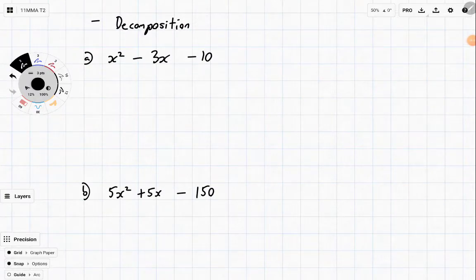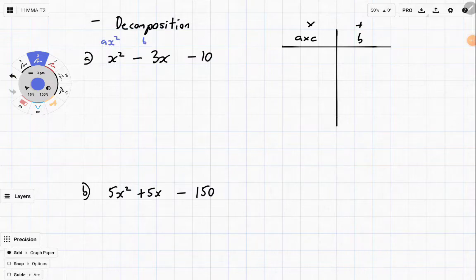Now decomposition is a very powerful tool. It usually is used in situations where we don't want to use the quadratic formula. So it works like this. You are trying to find numbers that multiply to a times c, and you're looking for numbers that add to b. What are a, b, and c? a is the coefficient in front of x squared, b is the coefficient in front of x, and c is the constant on the end. So in this case, a is 1 and c is negative 10, so that's equal to negative 10. b in this case is just equal to minus 3. So now we are looking for two numbers that multiply to negative 10 and add to negative 3.